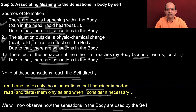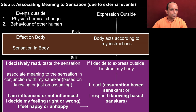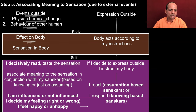We will observe how the sensations in the body are used by the self, and how we associate meaning to the sensation due to some external events. There is some event outside — a physiochemical change or the behavior of another person. This is going to have an effect on the body. Somebody talking to you has an effect on the body, somebody touching you has an effect on the body, or a cool breeze that is blowing is also having some effect on the body, and this produces sensation in the body.